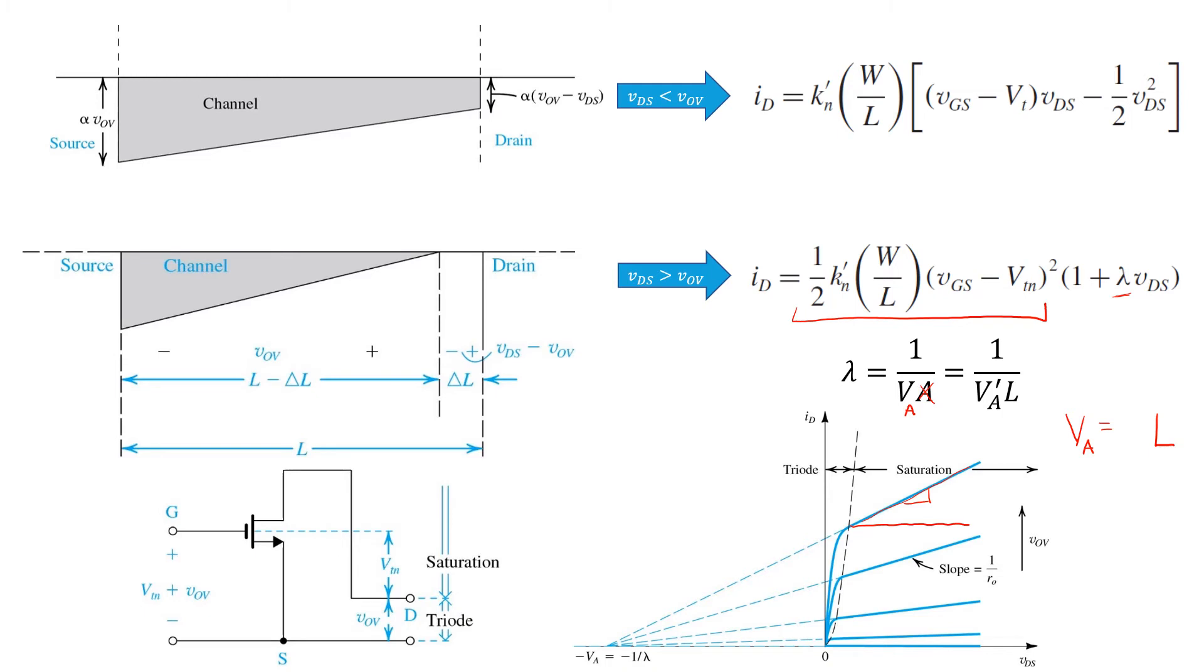If you make that substitution into our drain current expression, you'll see that implies that for shorter channel length devices L, the channel length modulation effect becomes more pronounced, and this slope is steeper. Indeed, for very long channel length devices, we see behavior that more closely mimics the ideal square law.